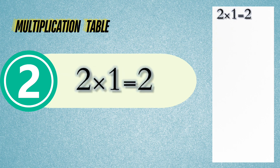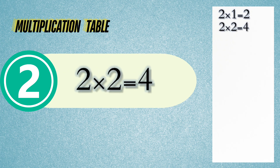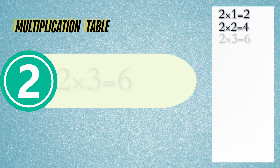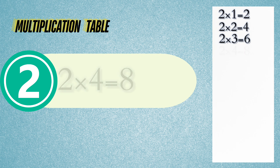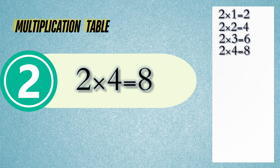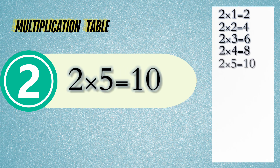Two times one is two. Two times two is four. Two times three is six. Two times four is eight. Two times five is ten.